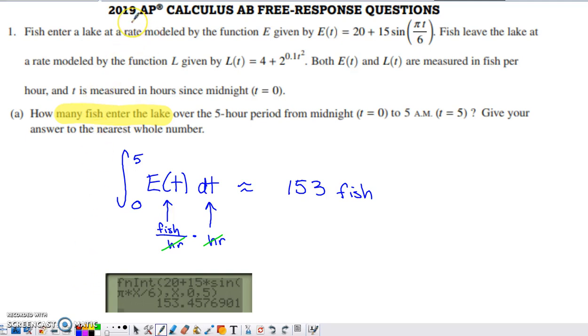Here's problem number one from the 2019 AP Calculus AB and BC free response questions. This is a calculator question, and this is the problem about fish entering and leaving the lake. We're told that fish enter a lake at a rate modeled by E(t). Fish leave the lake at a rate modeled by L(t). They tell us E(t) and L(t) both measure in fish per hour. t is measured in hours since midnight.